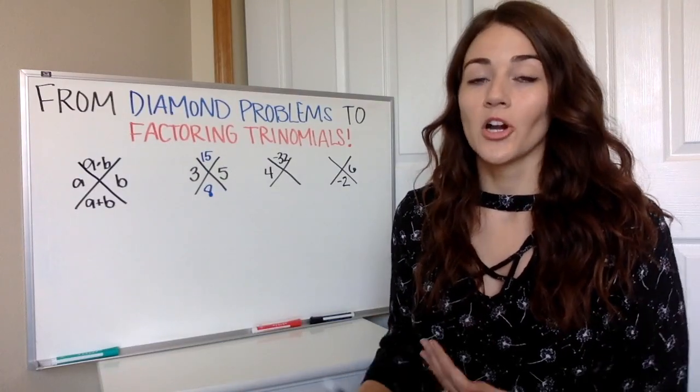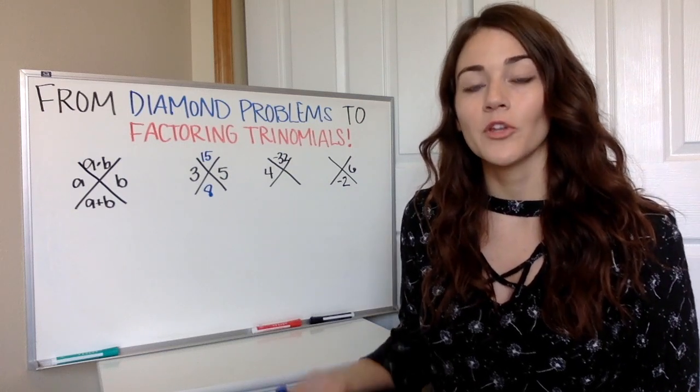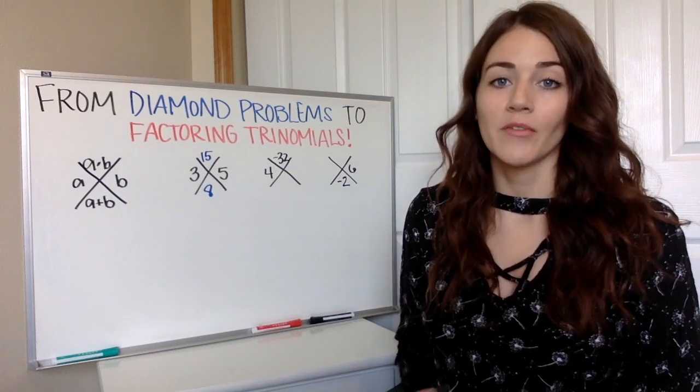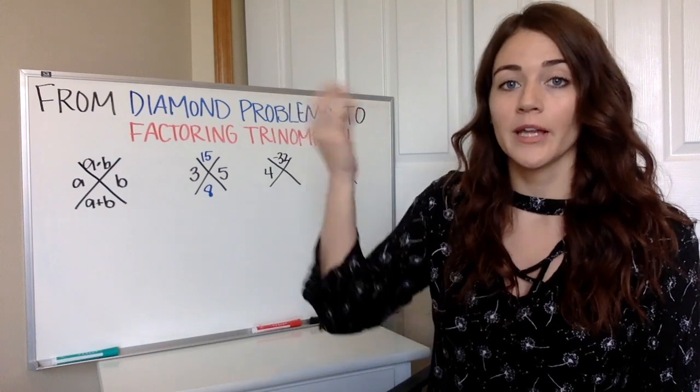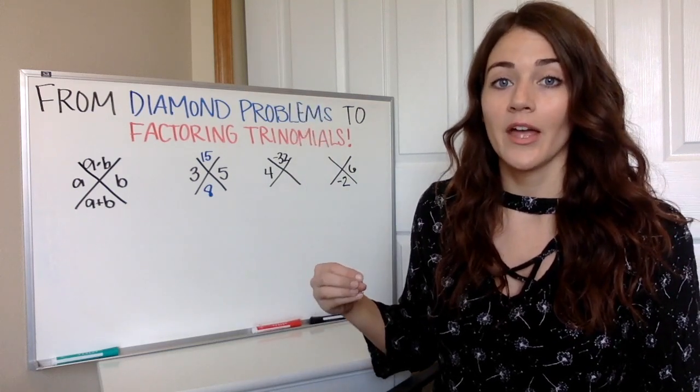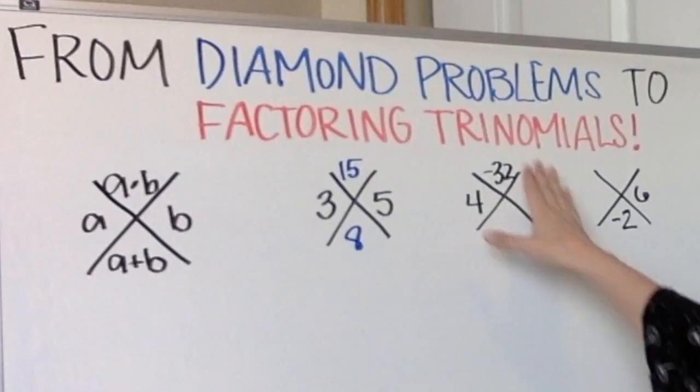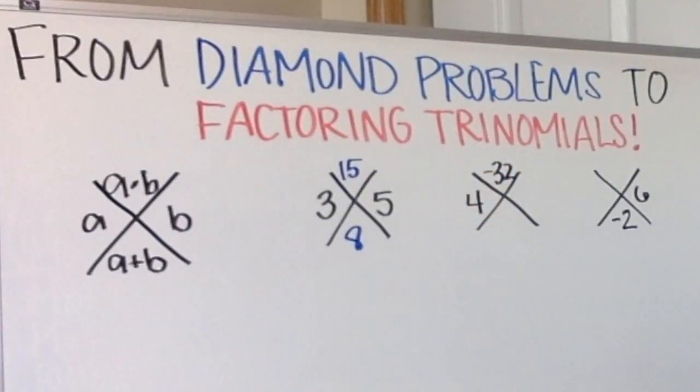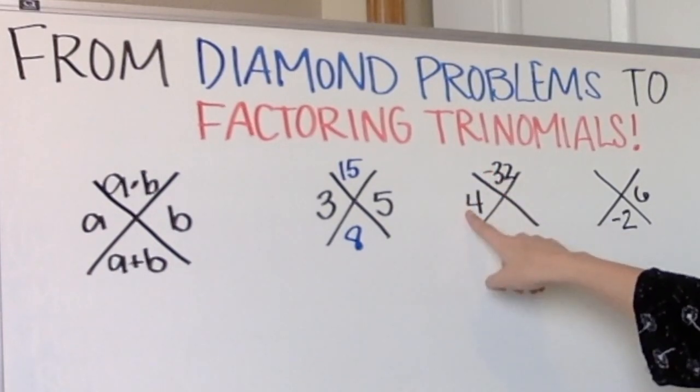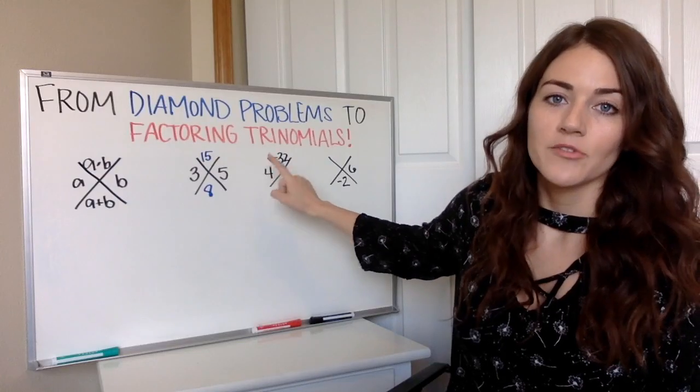However, it starts getting a little more challenging. Instead of giving you a and b, they're going to give you either the multiplying or the adding and then either a or b. They're not going to give you both. So like we have here.